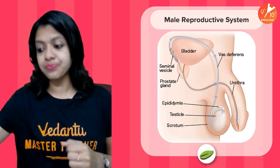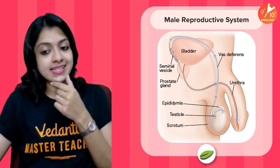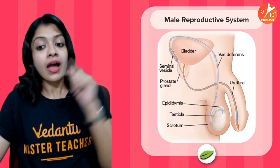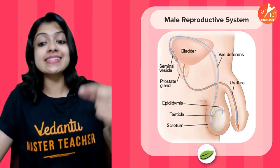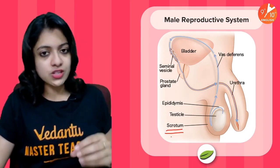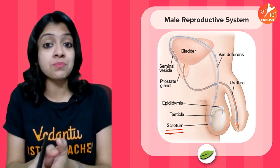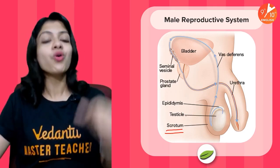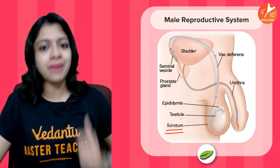The male reproductive system starts with a pair of testes, or testicles. The testes are placed slightly away from the abdominal cavity in a sac-like structure called the scrotum. The temperature within the scrotum is about 1 to 2 degrees Celsius lower than the rest of the body, which is optimal for sperm production. The main functions of the testes are to produce sperm and to secrete the hormone testosterone, responsible for secondary sexual characters in males.